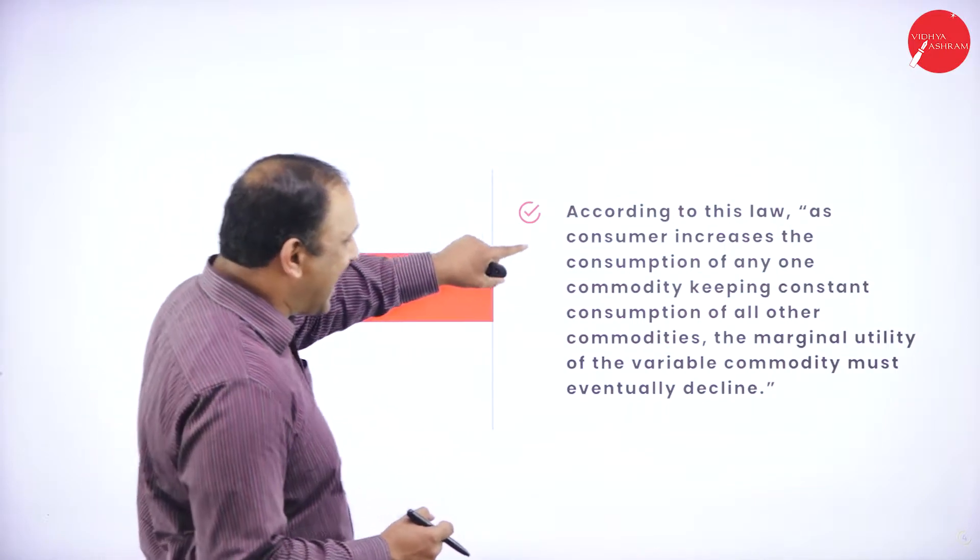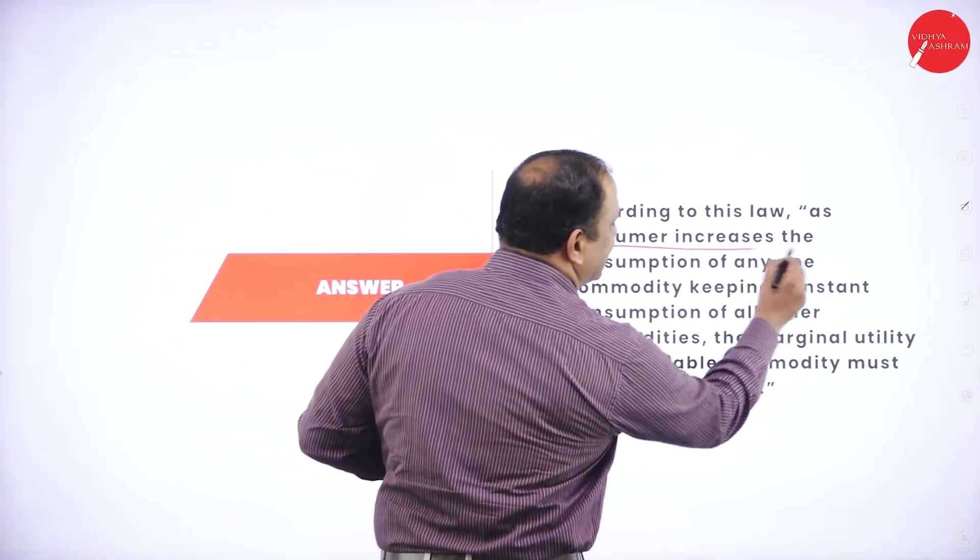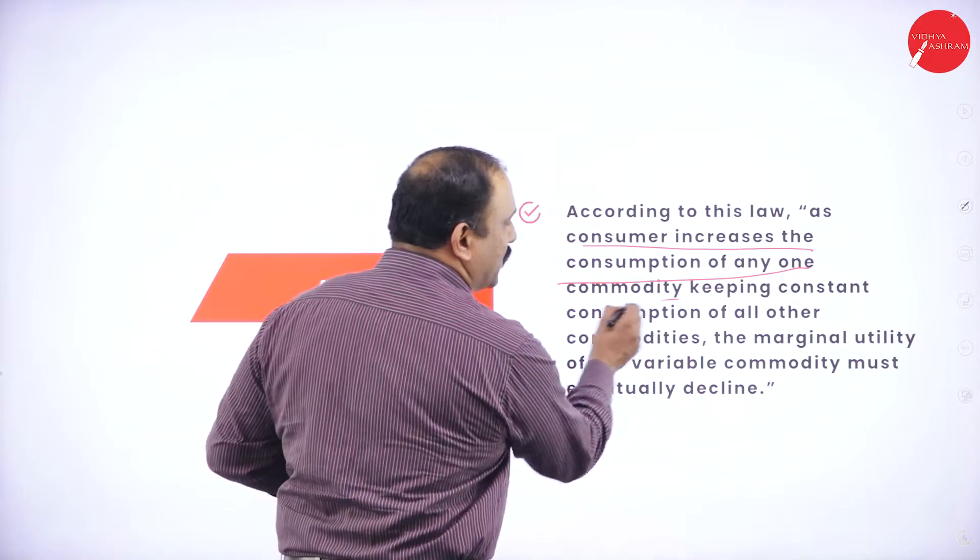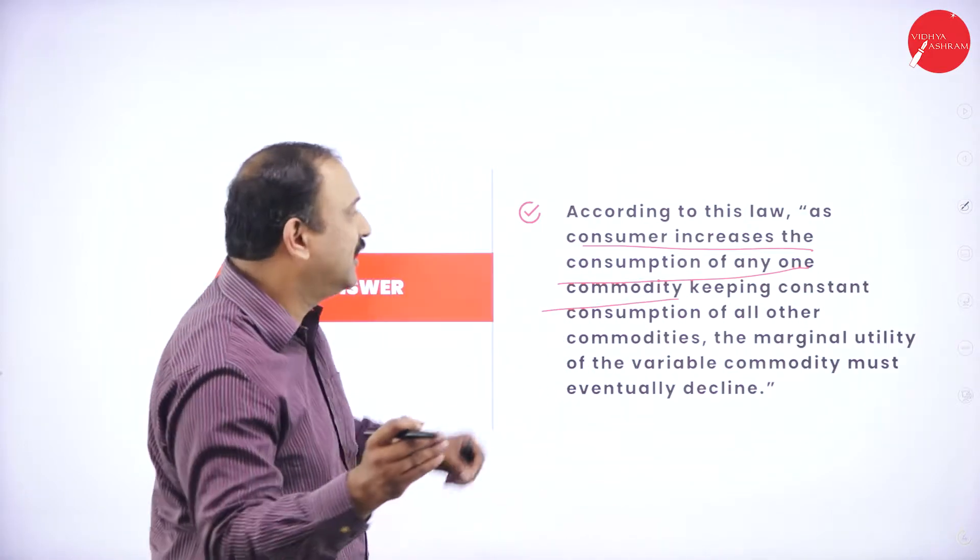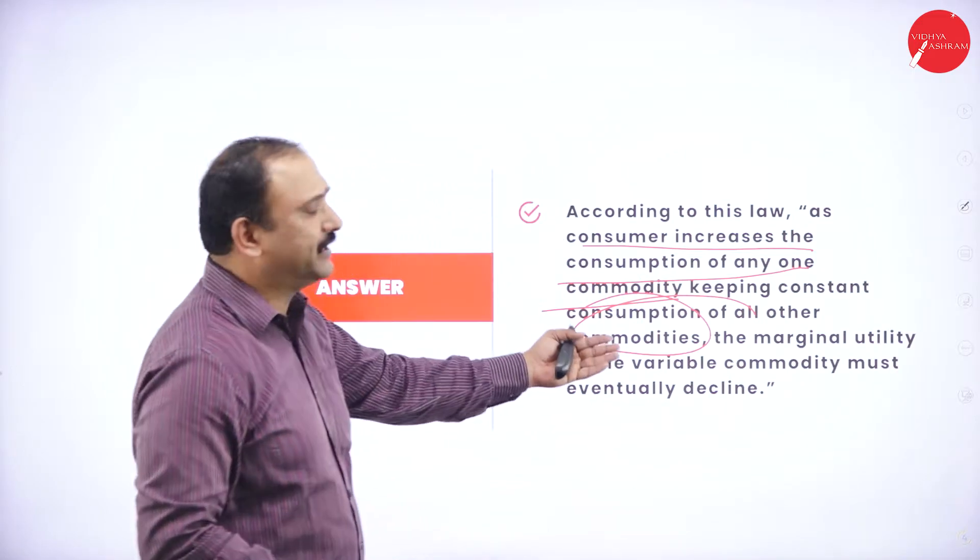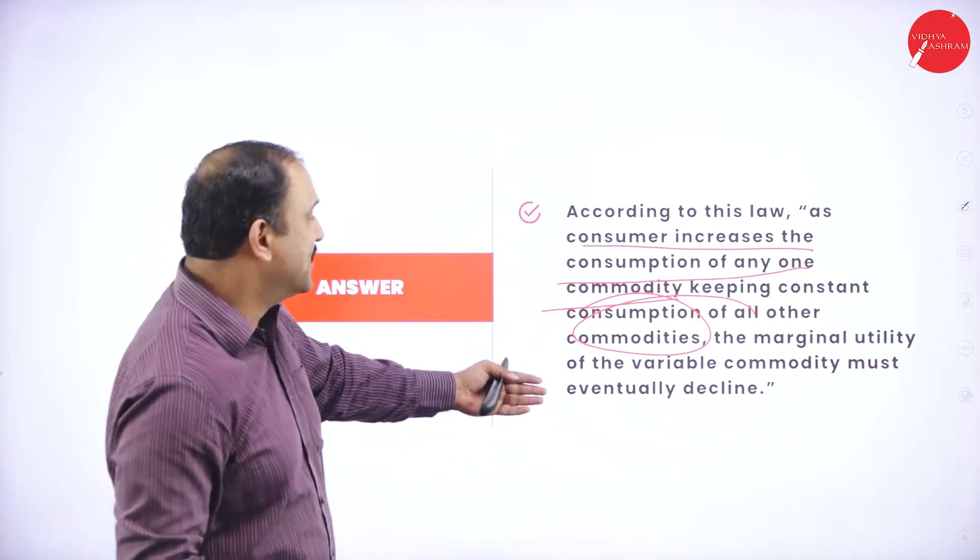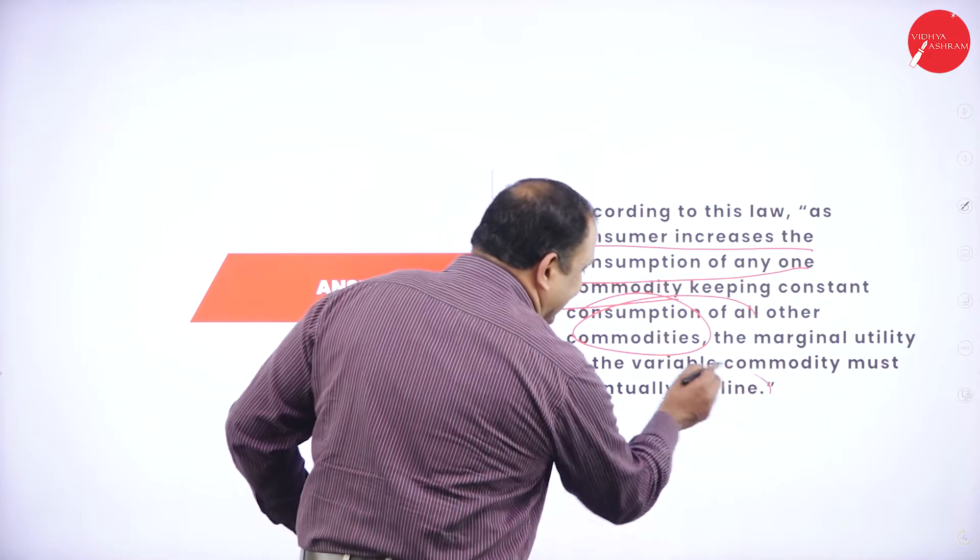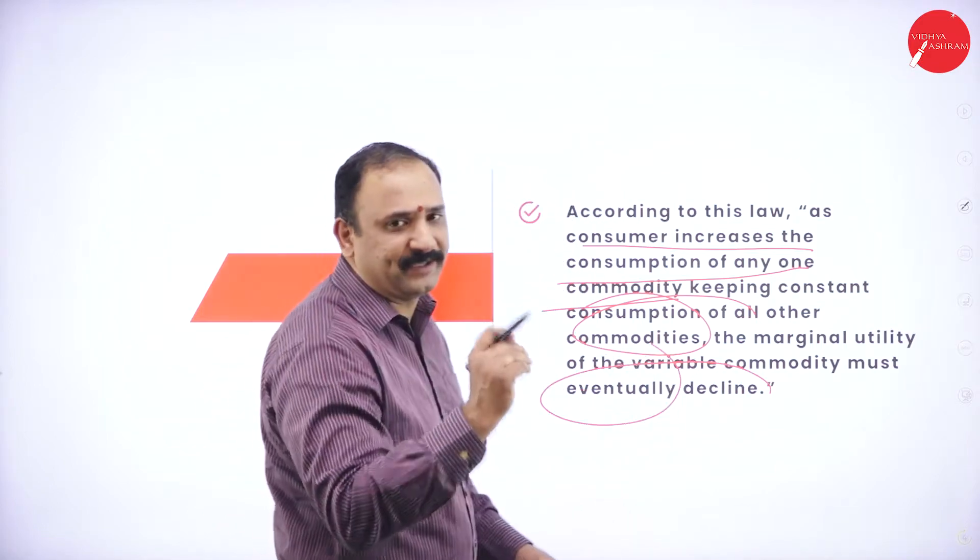According to this law, as the consumer increases the consumption of any one commodity, keeping constant consumption of all other commodities, the marginal utility of the variable commodity must eventually decline. Look at the statement itself.